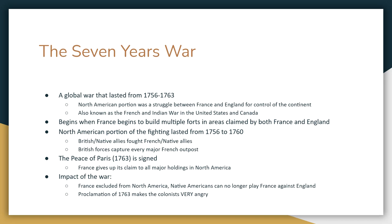You're going to have the British and their native allies fighting against the French and their native allies. The North American portion of this war goes from 1756 until 1760, during which the British forces capture all the major French outposts. By 1763, the war is over. The Peace of Paris 1763 is signed, and France gives up all its claims to North America. France is kicked off the continent, and the Native Americans who had been playing France against England for decades suddenly can't do that anymore.